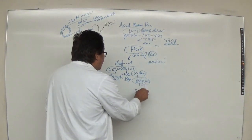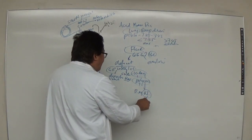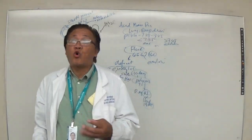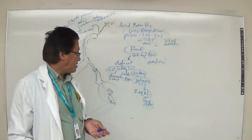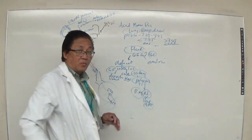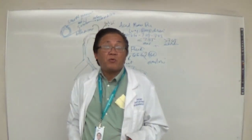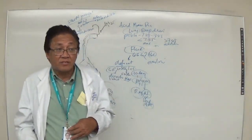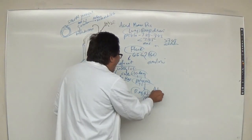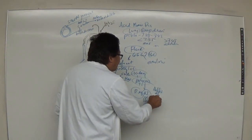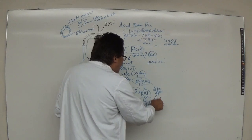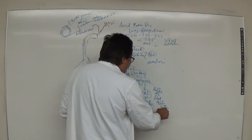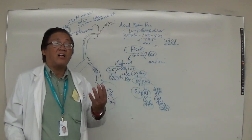Conditions leading to polyuria include diabetes mellitus and diabetes insipidus. In diabetes insipidus, there is a lack of ADH — antidiuretic hormone — produced in the hypothalamus and stored in the posterior pituitary. In diabetes mellitus, glucose in the urine causes osmotic diuresis, attracting water into the urine, resulting in polyuria.